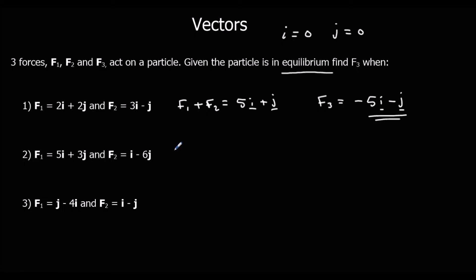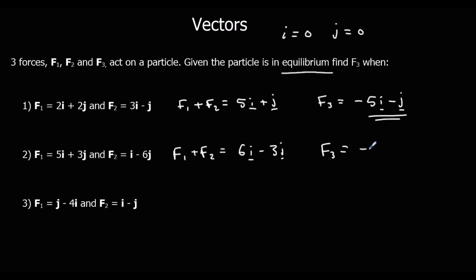Question 2: f1 and f2 add up to 6i minus 3j. So what's f3? To make the i's zero we need minus 6i, and to make the j's zero we need plus 3j. So f3 is minus 6i plus 3j.